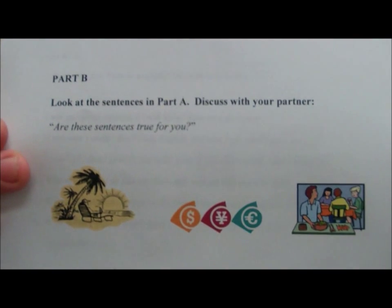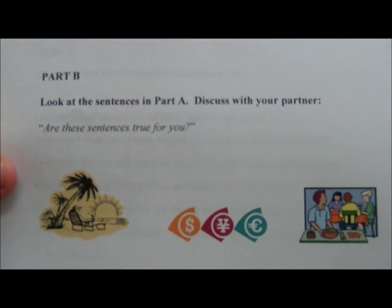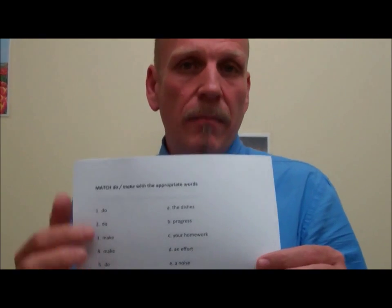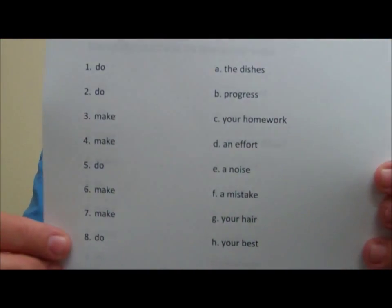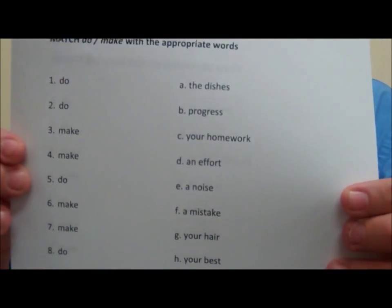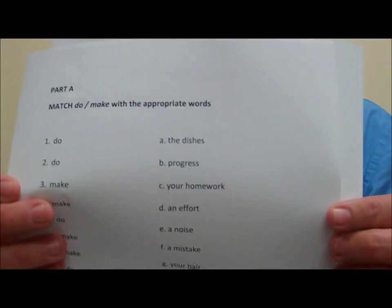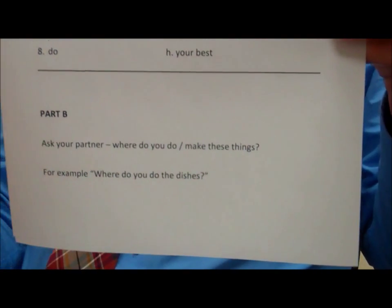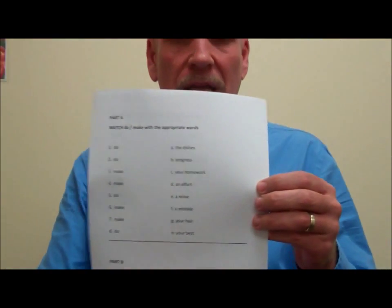It's very easy — you can just have them talk about whether this applies to them, and you can have them talk in pairs. Another example is with matching 'do' and 'make,' something that's very difficult for students. This focuses on just whether it's 'do' or 'make,' but you can convert it or add to it by having them discuss where they do these things, so that they're using it in some kind of context and really focusing on the meaning.